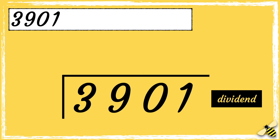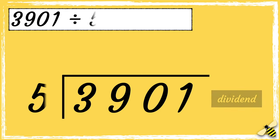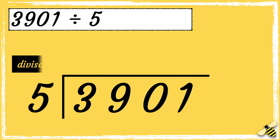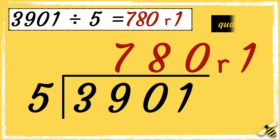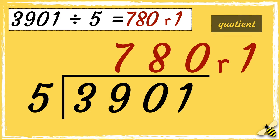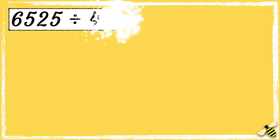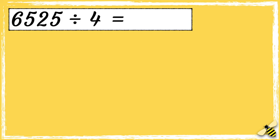Let's have a recap on the key vocabulary used. We have the dividend, which is the number that's being divided. Then we have the divisor, which is the number that we're dividing it by. And when we divide one number by another, the answer is called the quotient.